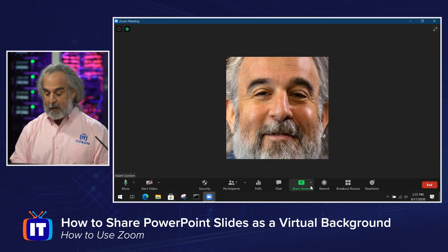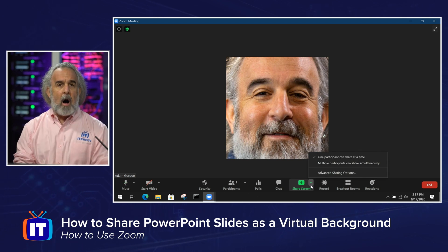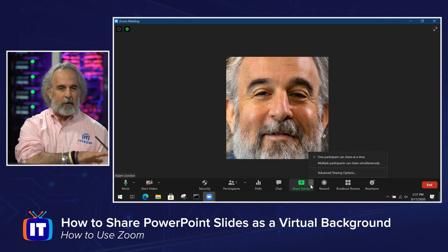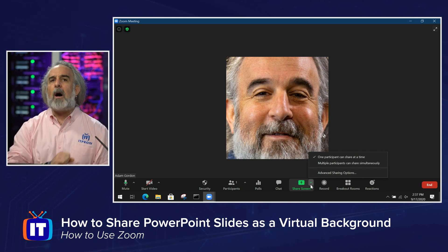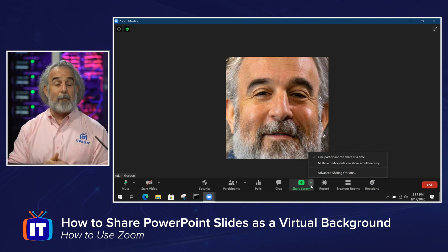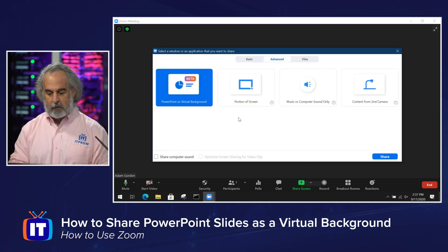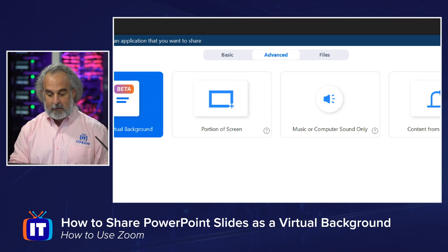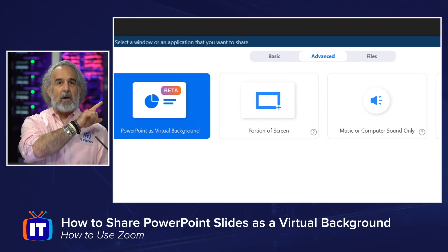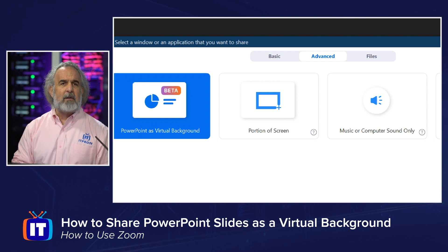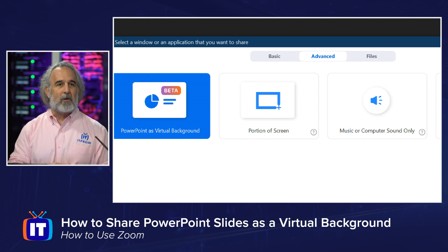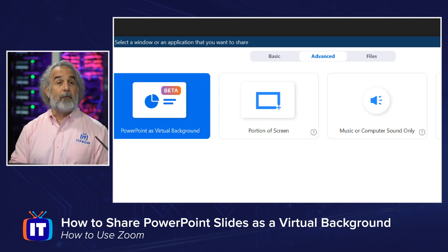I'm going to show you how to manipulate the video. We're going to click on that button and keep it there for a moment so I can talk to you about it. We're going to get a menu of different options that's tabbed, and we're going to go to the Advanced area so we can see where to select this new feature. So I'm going to click on Share Screen, and what you're going to see is that we have Basic, Advanced, and Files tabs. The new feature — the beta feature, as Zoom is currently calling it — is right there on the left-hand side of the Advanced tab: PowerPoint as your virtual background.